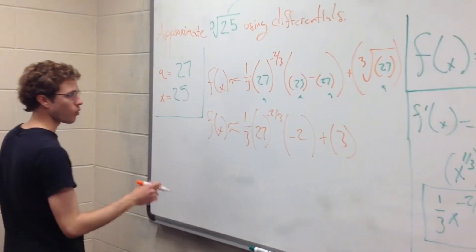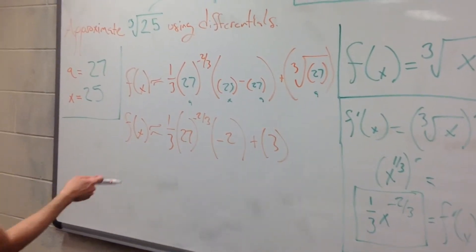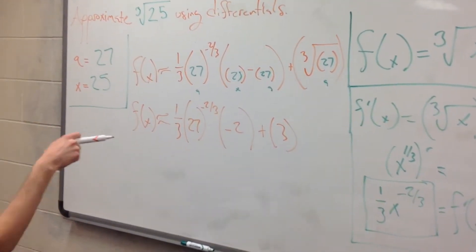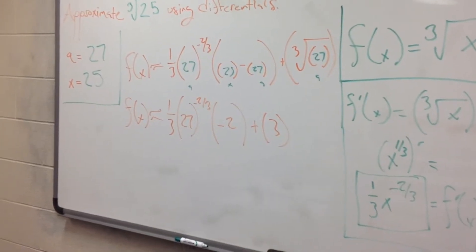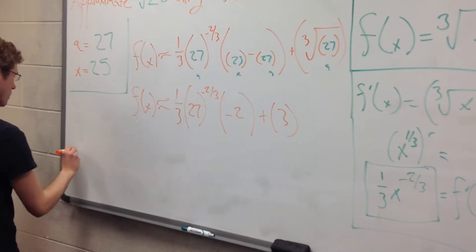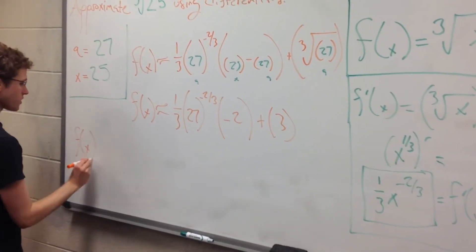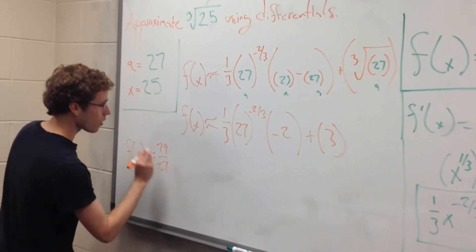Let's break this down a little bit more. And if we have one-third times 27 raised to the negative two-thirds times negative two plus three, that should give us 79 over 27.